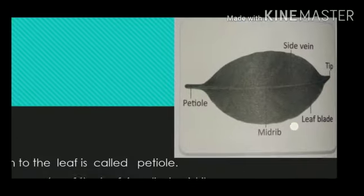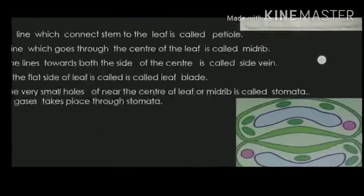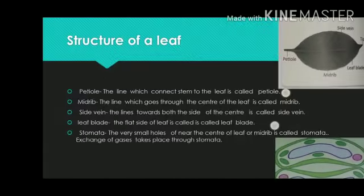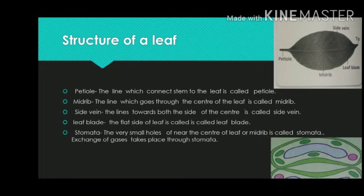This is the diagram of leaf. This is petiole, midrib, center of the leaf. And this is side vein. This is tip and leaf blade. This is diagram of stomata. The very small holes near the center of the leaf or midrib is called stomata. Stomata helps to absorb gases from the air. And we can also call the leaves the lungs of the plant.